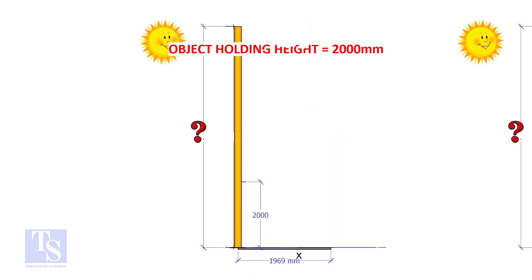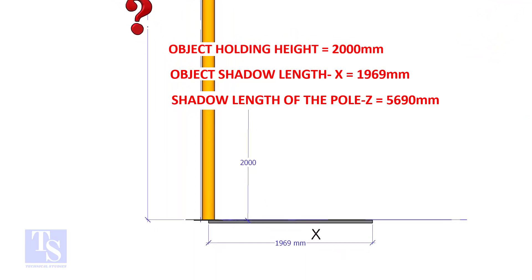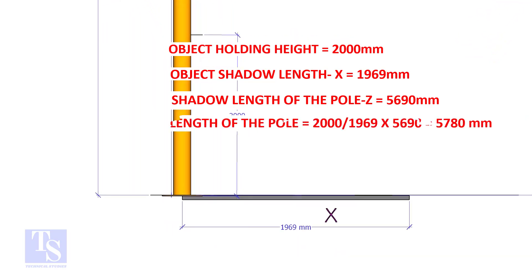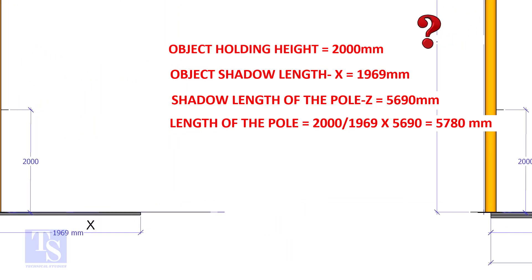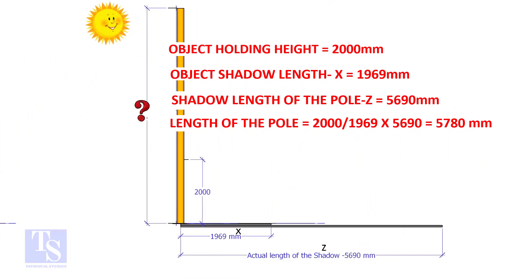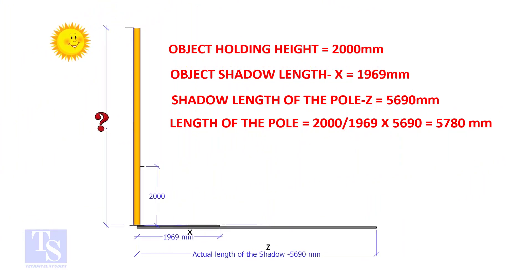Here, the object holding height is 2000mm. Object shadow length is 1969mm. Pole shadow length is 5690mm. Apply the formula. The height of the pole is 5780mm.